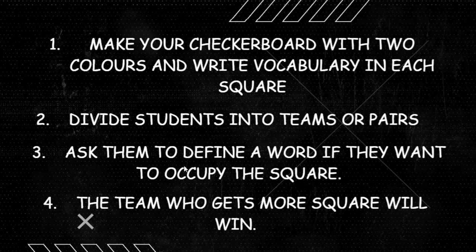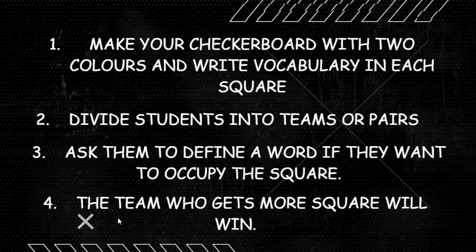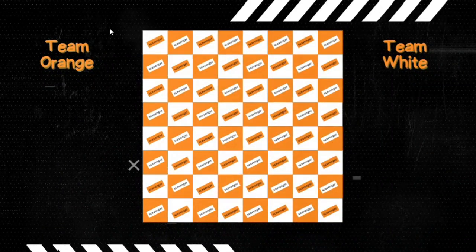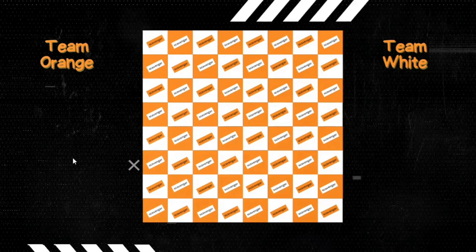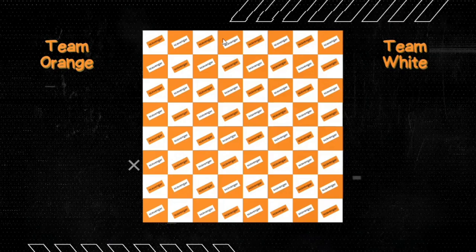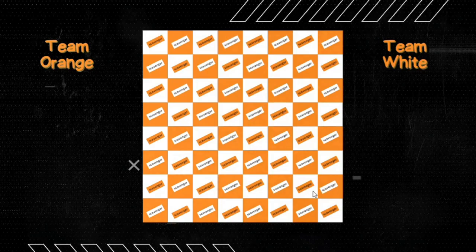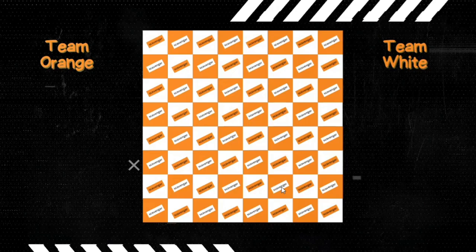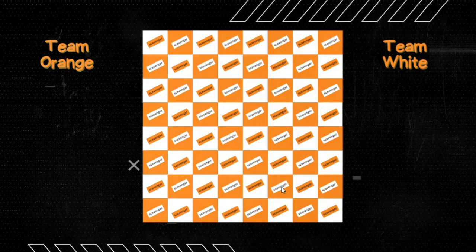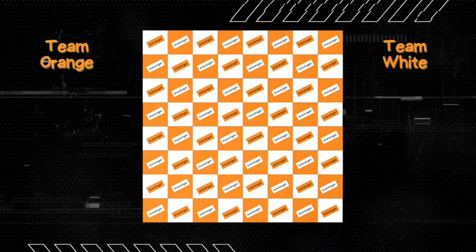Children need to define a word to acquire a square, and the team that gets more squares will win. Looking at the checker board, you'll see team orange and team white — you can play with large groups, small groups, or even pairs. Vocabulary is written in the rectangles. They define a word or use it in a sentence, and if correct, they occupy the square. This encourages vocabulary memorization with a GBL approach, making it effortless.